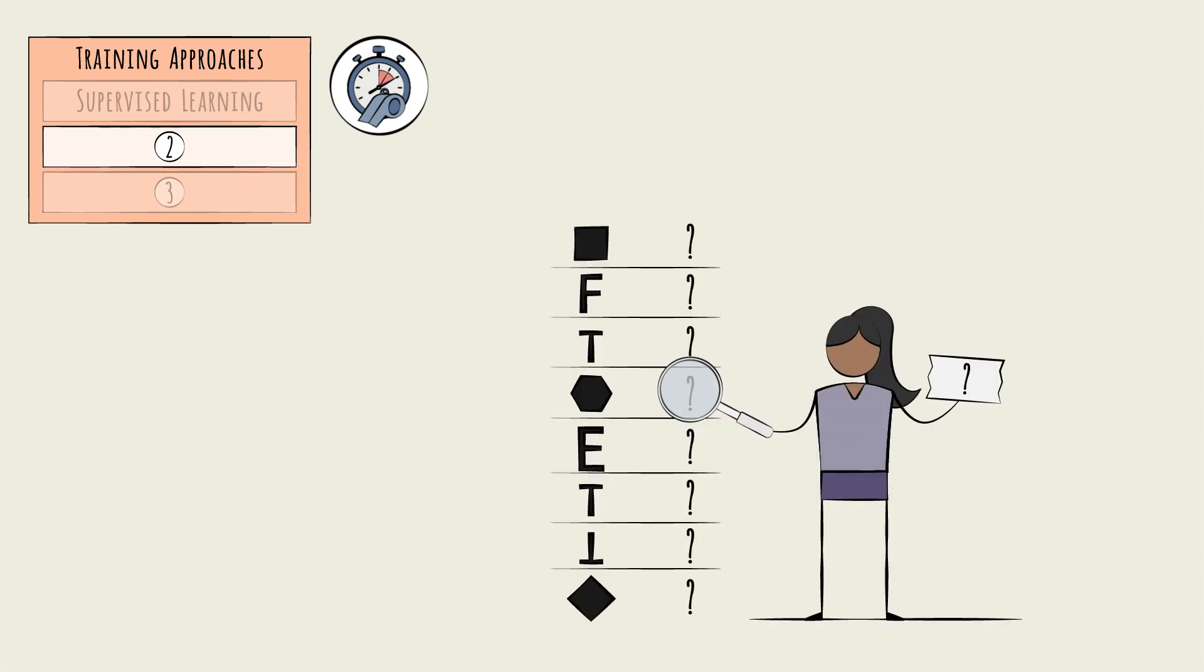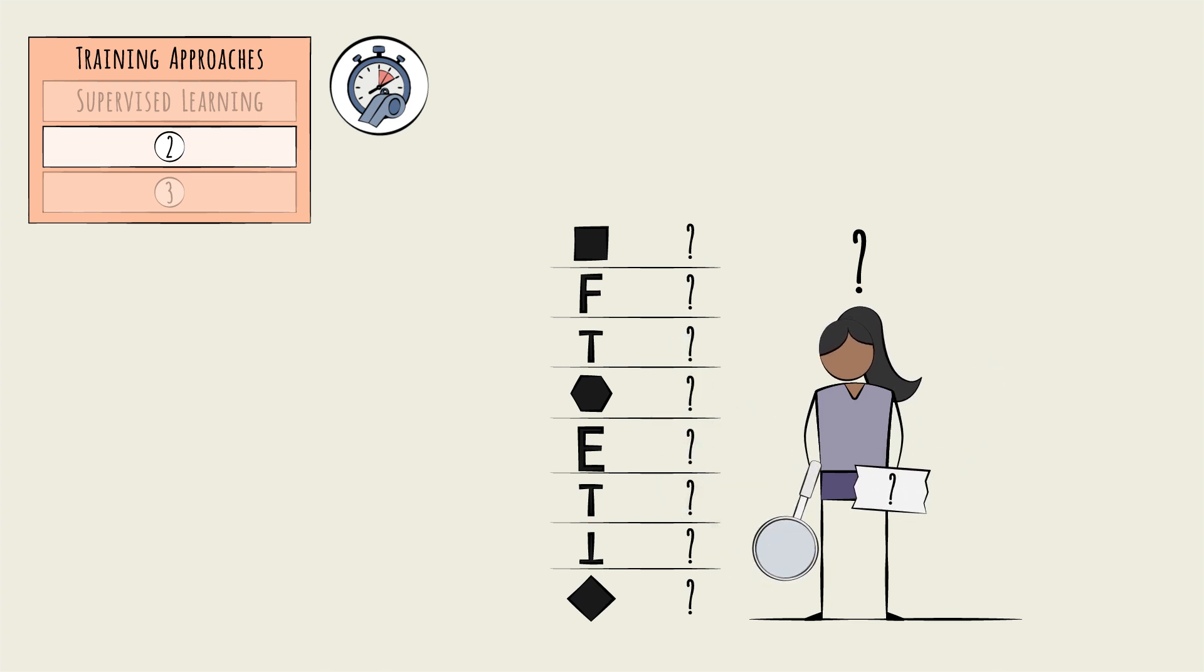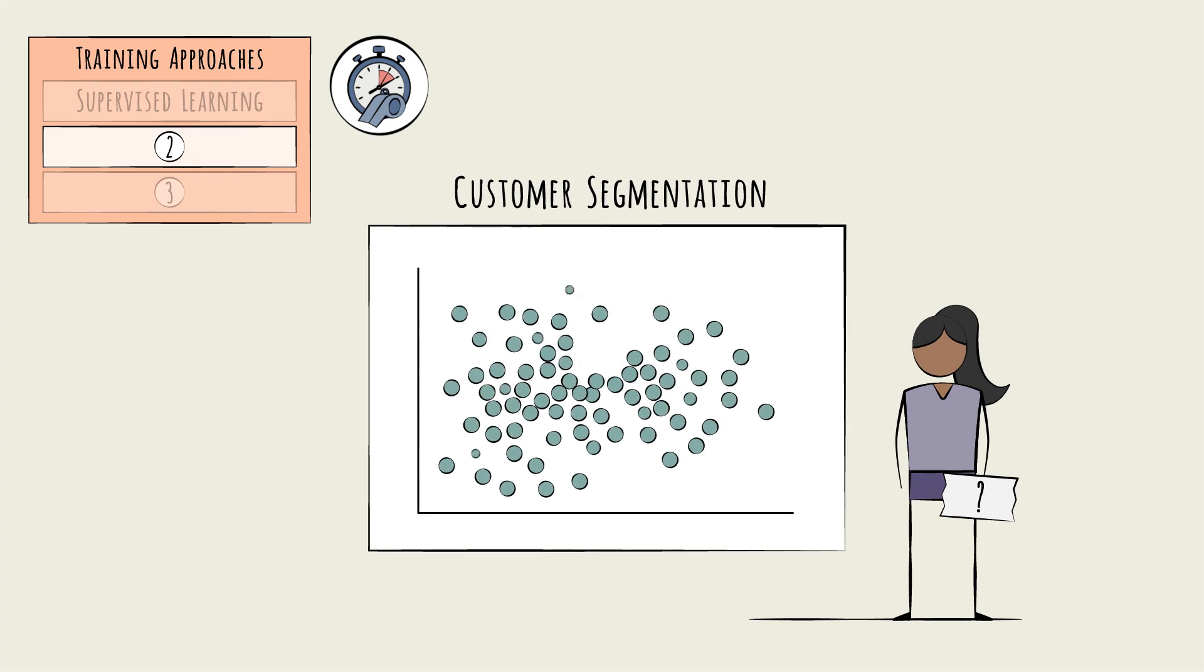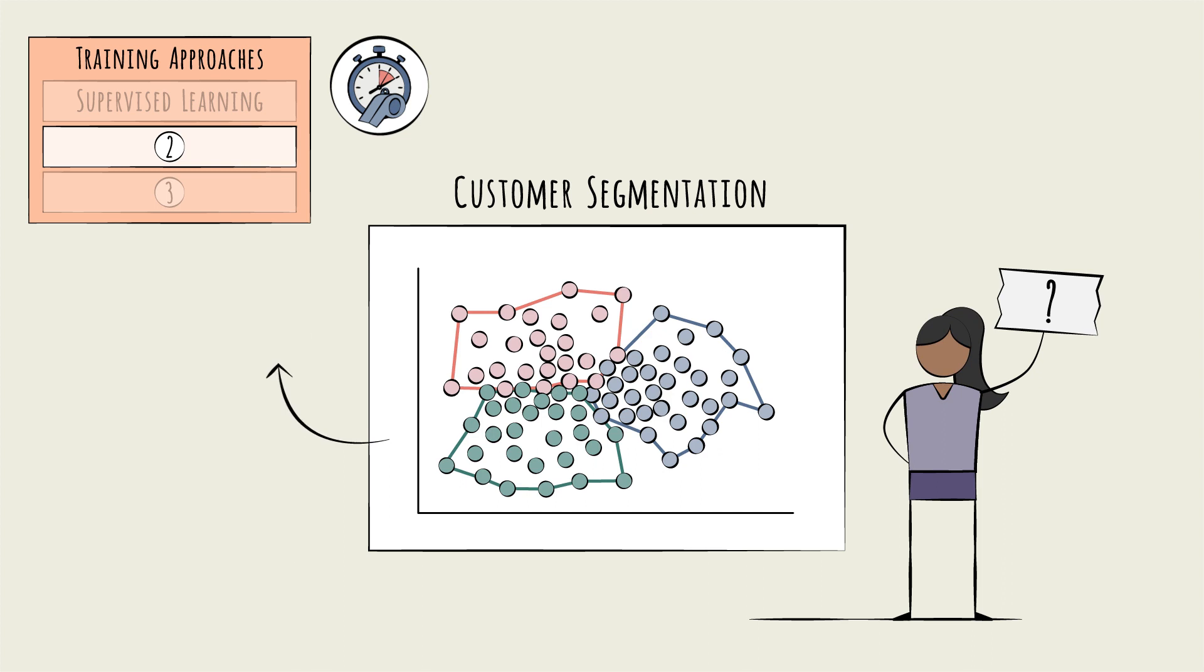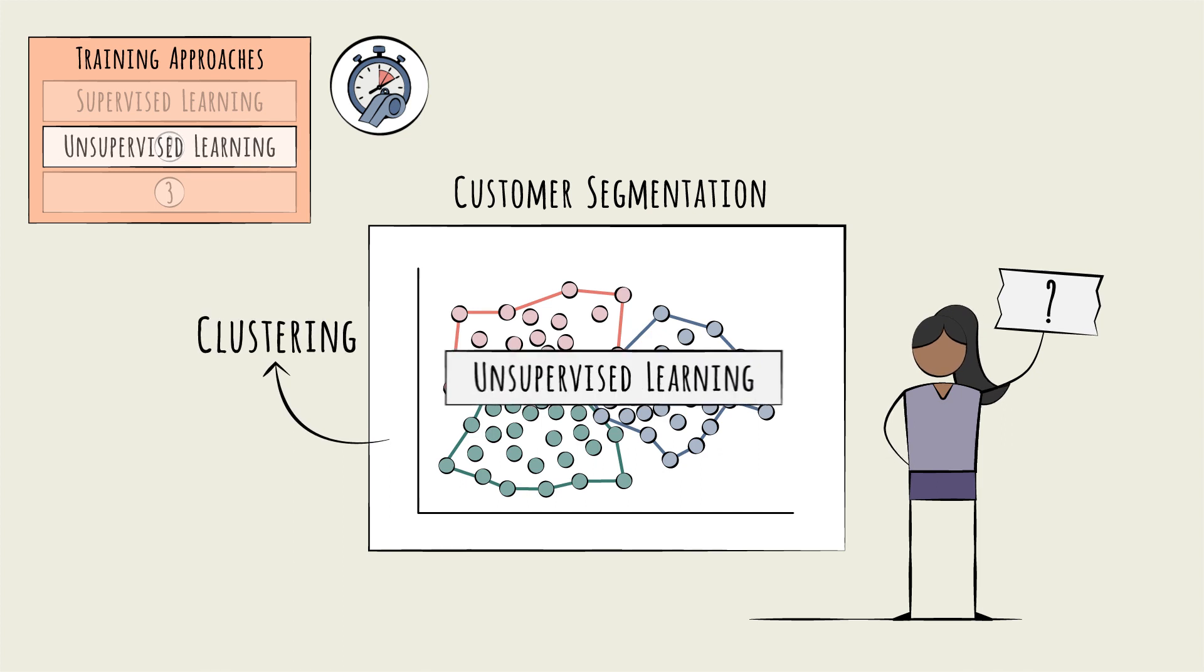Sometimes, the absence of labeled data is not about feasibility. It's about the nature of the problem. The outputs simply cannot be known in advance. A customer segmentation model is a good example. The point of the model is to sort customer profiles into similar groups, based on patterns the model detects. The outputs, the assigned segments, are only known after the model is trained. This type of approach is called clustering. Training with unlabeled data is called unsupervised learning.